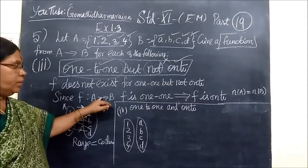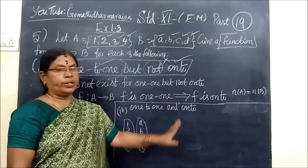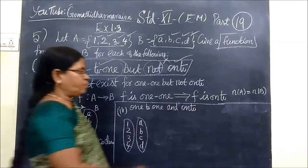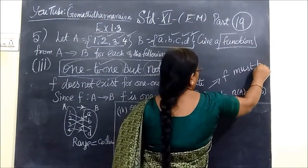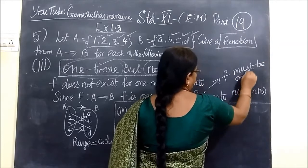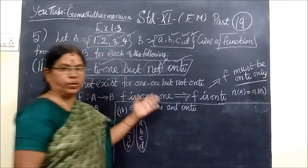This is the example which tells you. This is very important: f is 1-1 implies f is onto. f must be onto when n of A equals n of B. So in this way you are writing the answer.